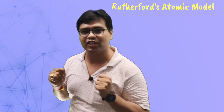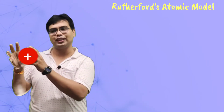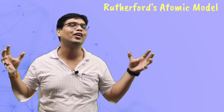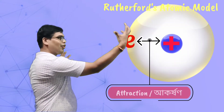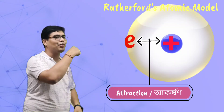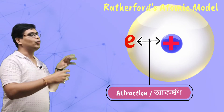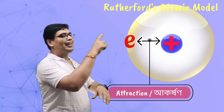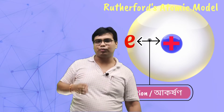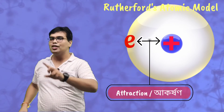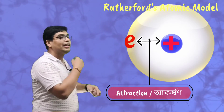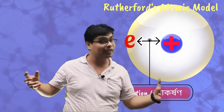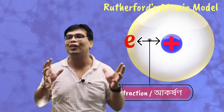By electrostatic force of attraction. That means if it's positive and negative, if you have an electron, the electron will be attracted to the nucleus. The first one is the nucleus, the second one is the electron, and the third one is the electrostatic force of attraction.